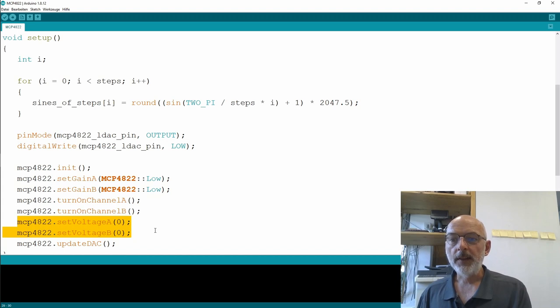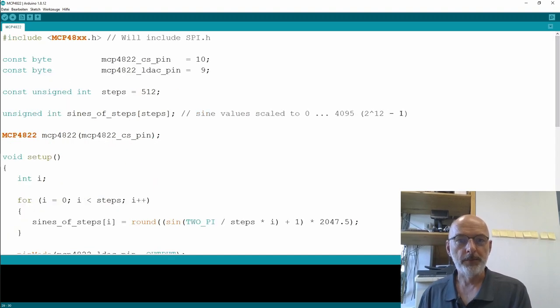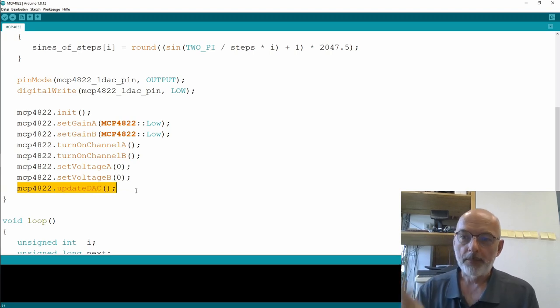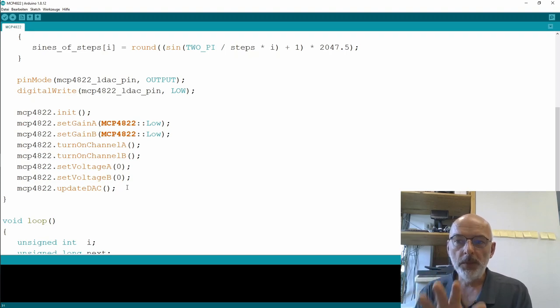And you can set the voltage. So digital value between 0 and to the power of 12 minus 1, 4095. Anything else? Then you do an update DAC. Please note that this library only communicates with the DAC when you execute that command. You can do all your settings and then when you execute update DAC information is actually sent via SPI to the DAC.